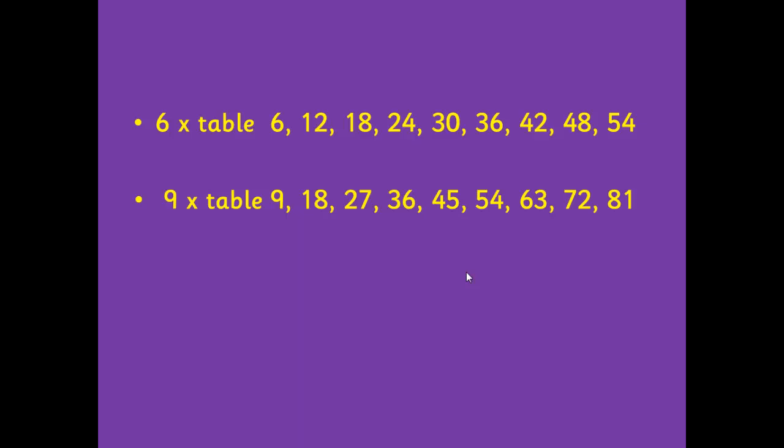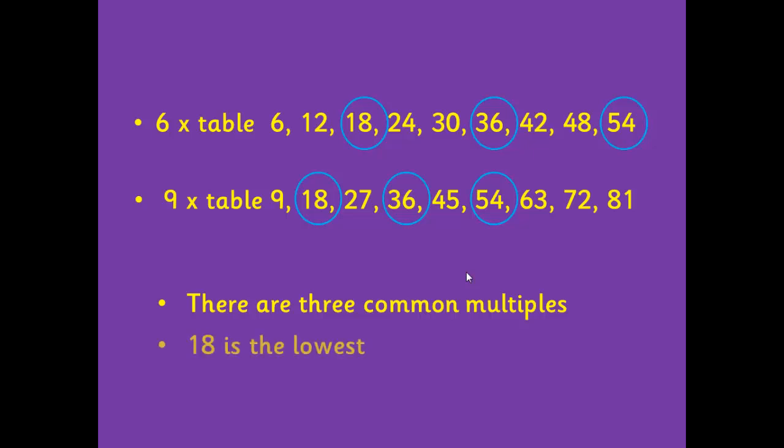Now what we are looking for are numbers that appear in both of these tables. We can see that 18 appears in both of these tables, and we can see that 36 also appears in these tables. Can you find another number? That's right, 54 appears in both the 6 and the 9 times tables. So there are 3 common multiples. Now we want to find the lowest common multiple, because if we can find a low number it's usually much easier to work with than a higher number. So the lowest common multiple here is 18.